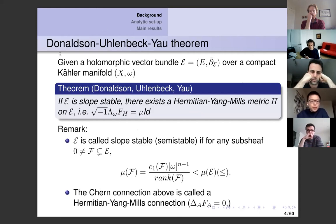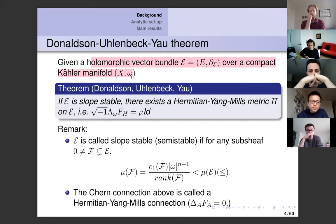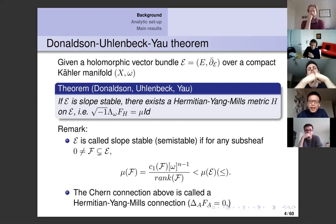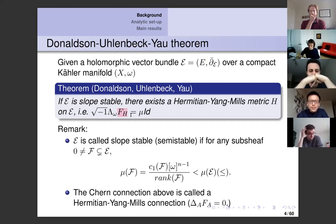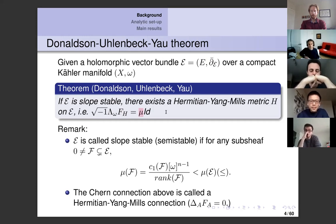Let me recall the Donaldson-Uhlenbeck-Yau theorem. Suppose you have a holomorphic vector bundle over a compact Kähler manifold. The theorem says that if E is slope stable, then there exists a Hermitian-Yang-Mills metric h on E. By a Hermitian-Yang-Mills metric, we mean that the curvature of the Chern connection determined by h, when you contract with the Kähler form, equals a constant multiple mu of the identity map.